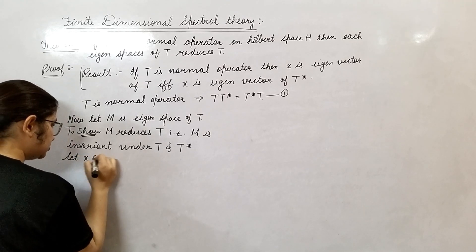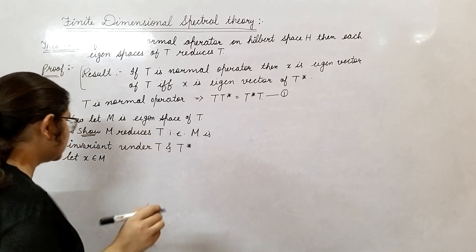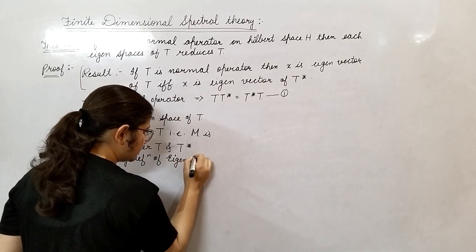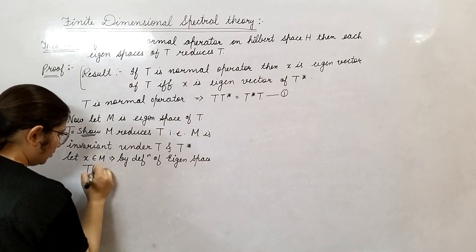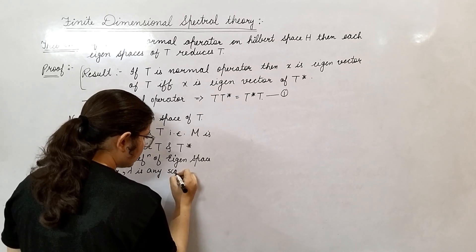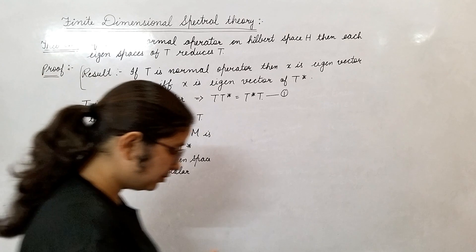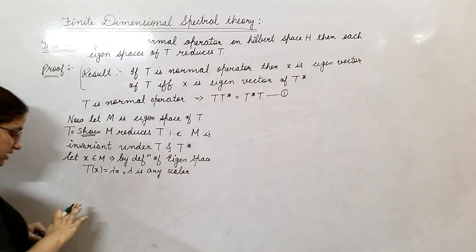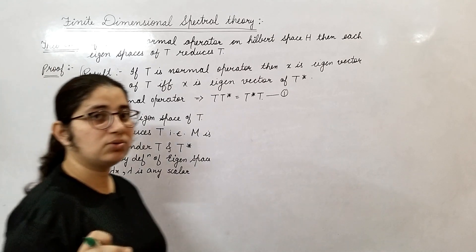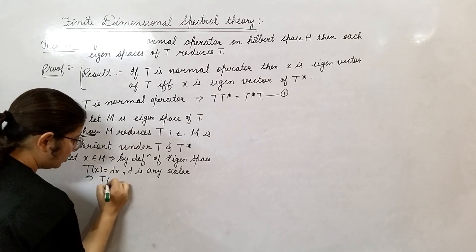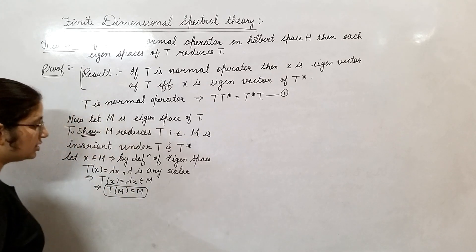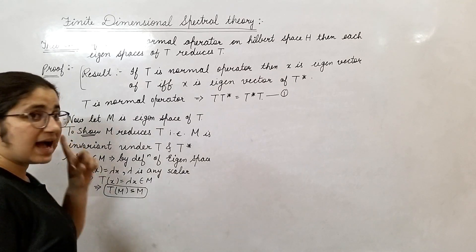Let x belong to M. If x belongs to M, then by definition of eigenspace, T(x) equals lambda times x, where lambda is a scalar. Since the eigenspace of T is always a closed linear subspace of Hilbert space H, and M is closed under scalar multiplication, lambda*x belongs to M. This implies T(x) = lambda*x belongs to M, so T(M) is contained in M, and M is invariant under T.